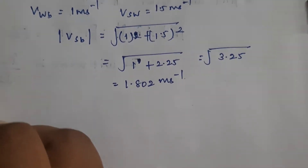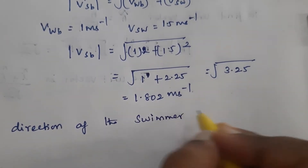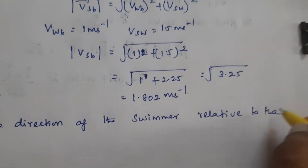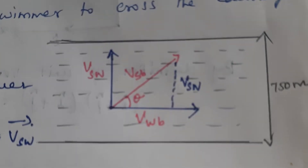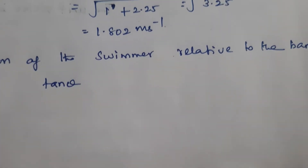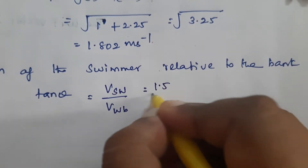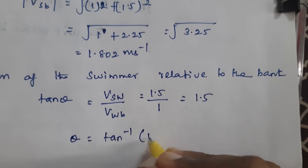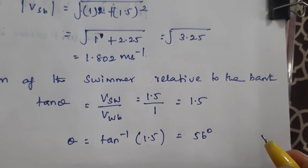Now we find the direction of the swimmer relative to the bank. tan θ = opposite side / adjacent side = V_SW / V_WB = 1.5 / 1 = 1.5. Therefore, θ = tan⁻¹(1.5) = 56 degrees. This is the direction of the swimmer with respect to the bank.